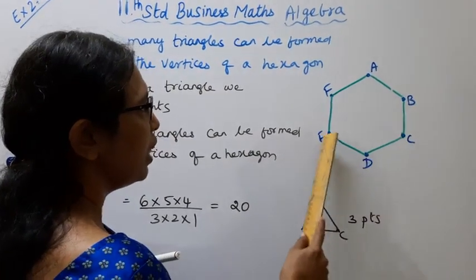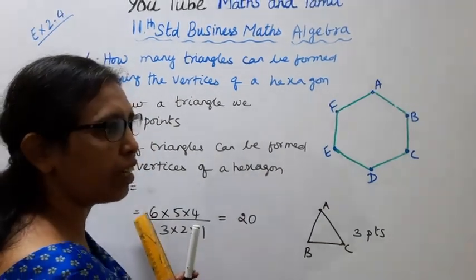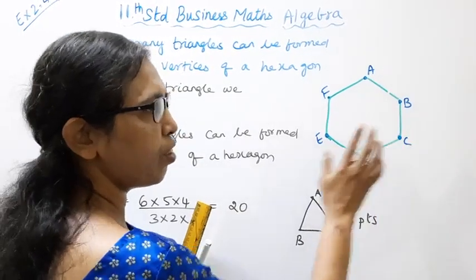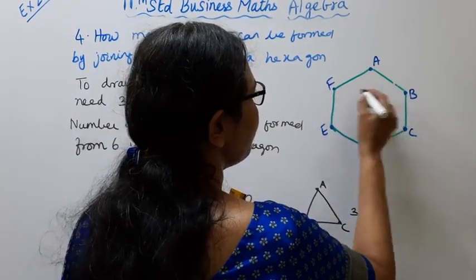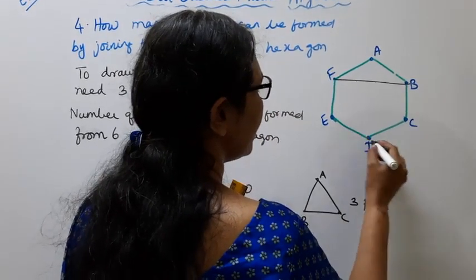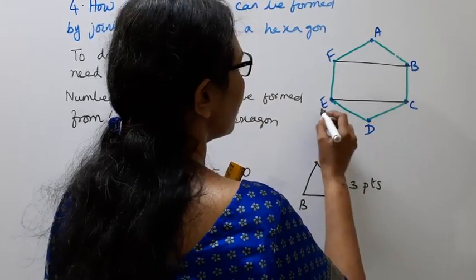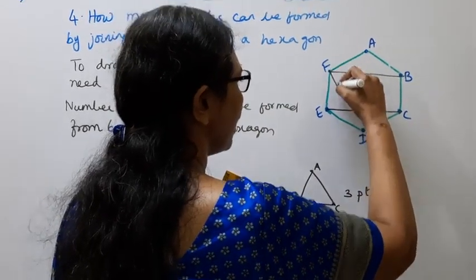Points A, B, C, D, E, F - six points, and we need three points to draw a triangle.